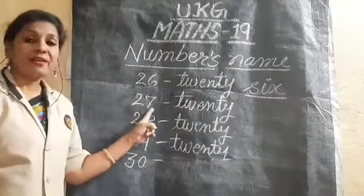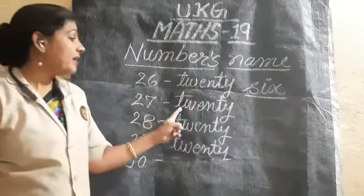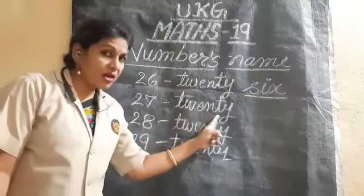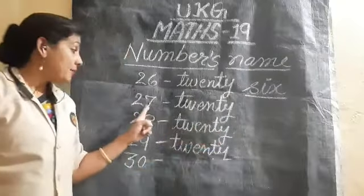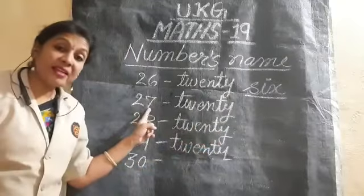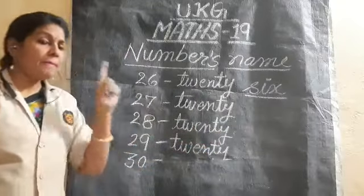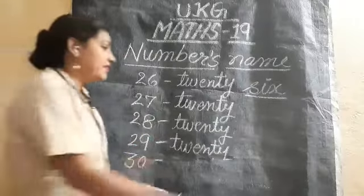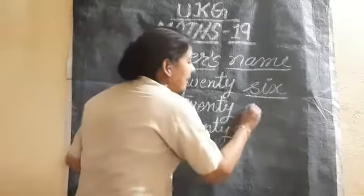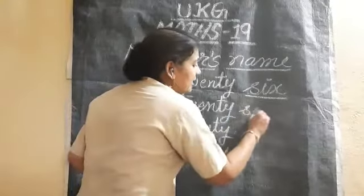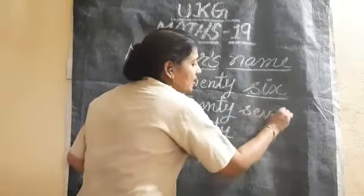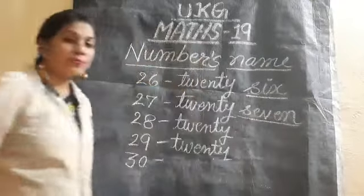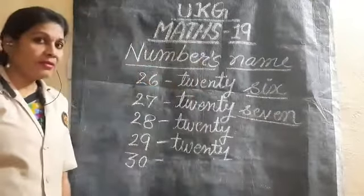Next is 27. We keep twenty and just change the spelling at the end. For 7, the spelling is S-E-V-E-N. So 27 is twenty seven.